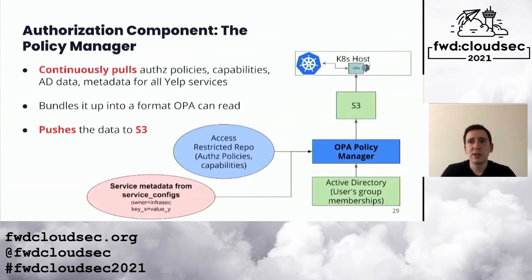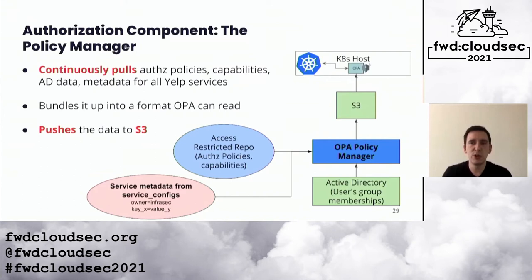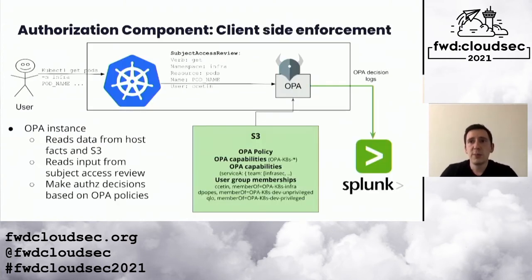Next I'll cover the OPA Policy Manager — a service we use to compile all of the input data that OPA needs, bundle it up into a format it can read, and push it to S3. It runs continuously and only updates the bundle when anything has changed.